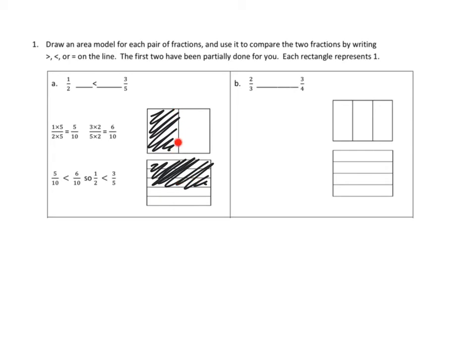Now that we've done vertically here into halves, we need to go ahead and divide further into fifths. That gives us 5 parts. That shows us that 1 half right here, if we divided it further into five parts, equals 5 tenths — 5 out of 10.